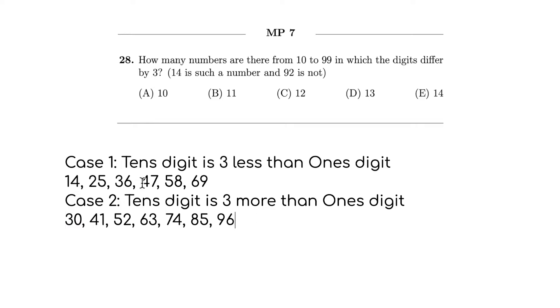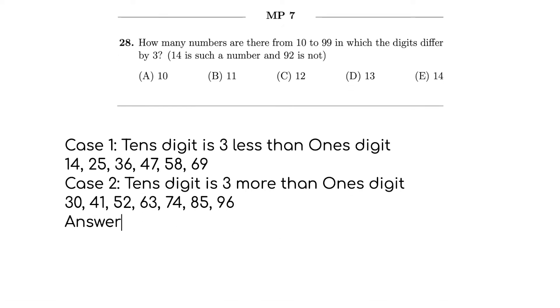So that means we just have to count these: one, two, three, four, five, six, seven, eight, nine, ten, eleven, twelve, thirteen. So the answer is D, 13.